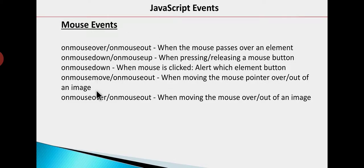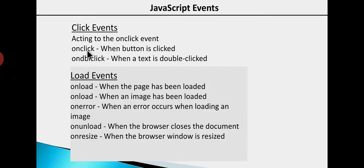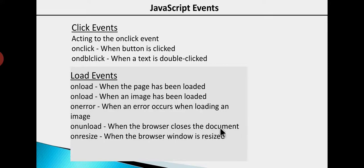These events are connected to the mouse, so you can handle these mouse events. There are also click events: onClick means single click — when the button is clicked this event will generate. onDblClick means double click — when text is double-clicked this event generates. There are also load events, such as when a page has been downloaded or loaded, and we can handle those events while ignoring others.